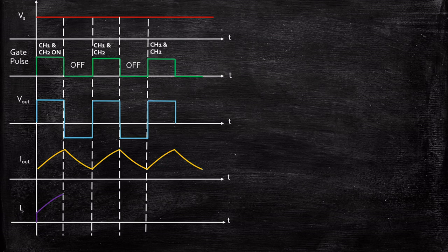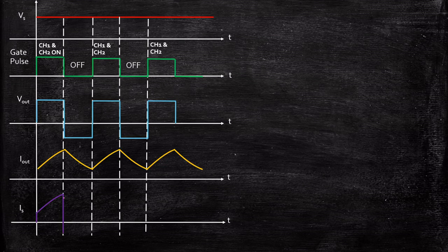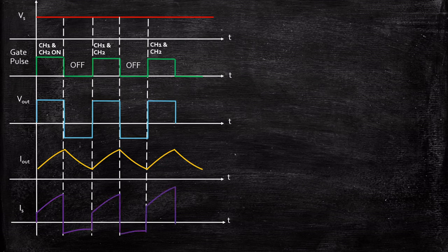Now, for the source current waveform — some textbooks include this. When CH1 and CH2 are turned on, the source current and load current are the same since they are in series, so source current follows the Iout waveform. When the choppers are turned off, current flows from the load back to the source, so source current goes in the negative direction. It decreases because the energy available in the inductor being fed back is also dissipated through resistor R. The cycle repeats in this fashion.